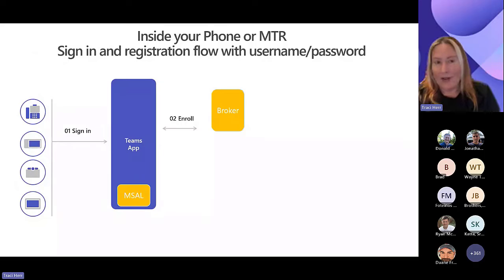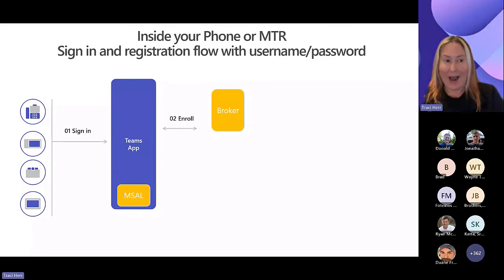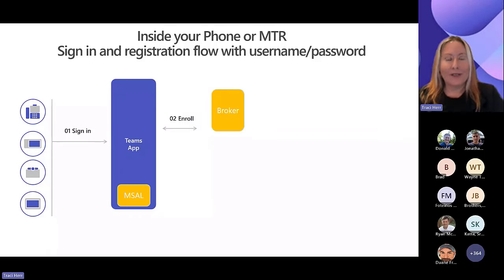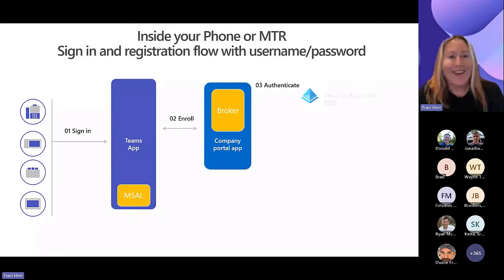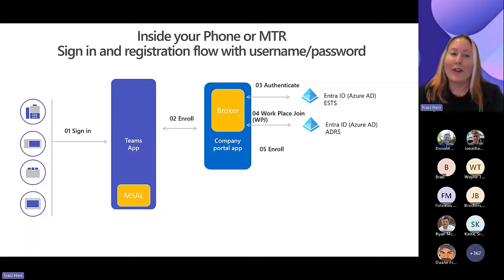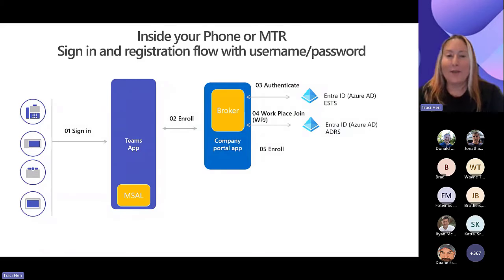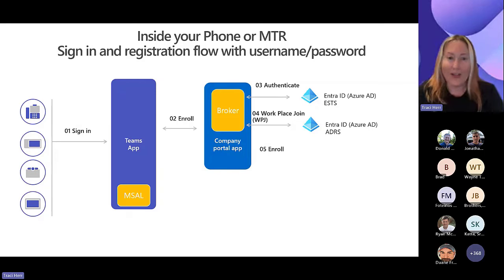Looking inside your phone or MTR: we have a Teams app trying to sign in. First you see the authentication code — go to aka.ms/teamsdevice. We're signing into the Teams app and then enrolling with the Company Portal app. There are two apps installed on these devices. The Company Portal app has two pieces: the broker authenticator piece and the Company Portal itself.